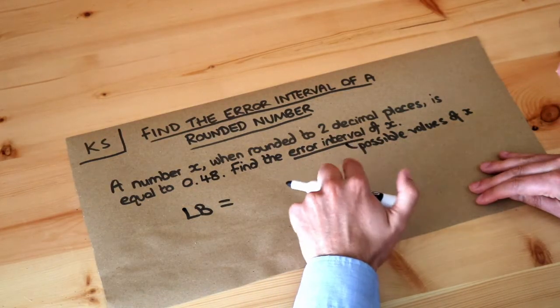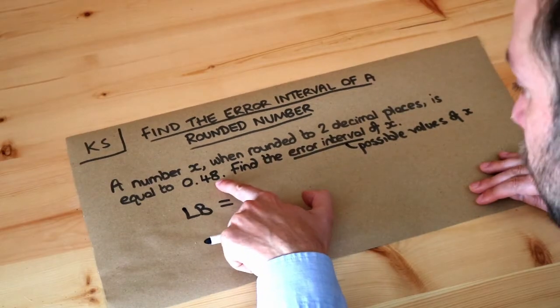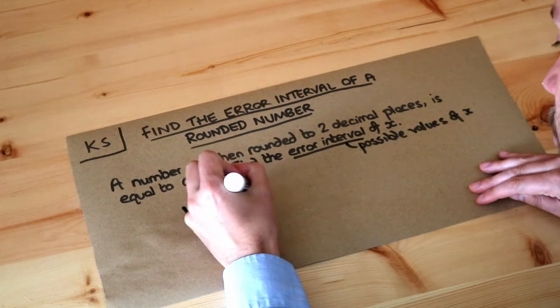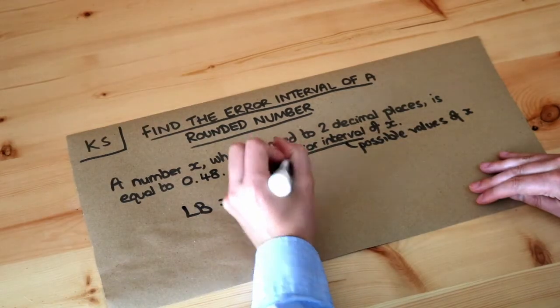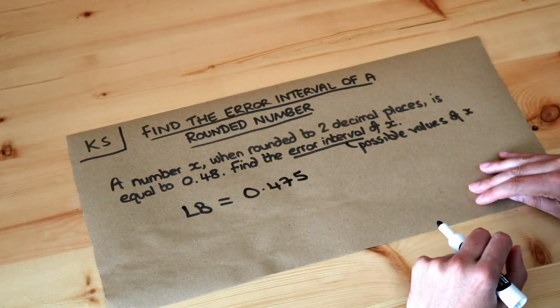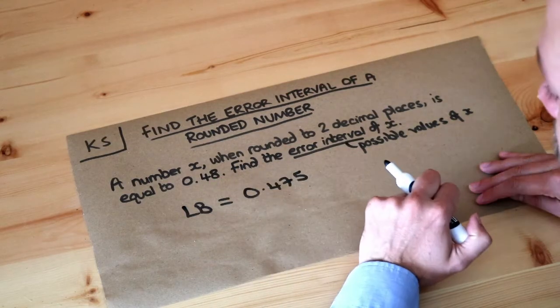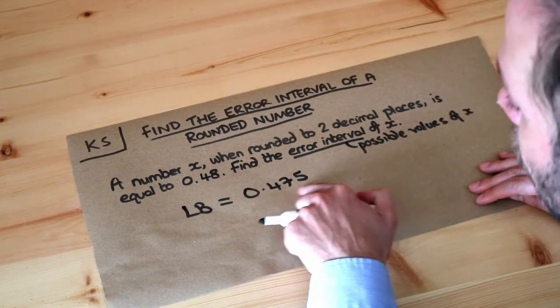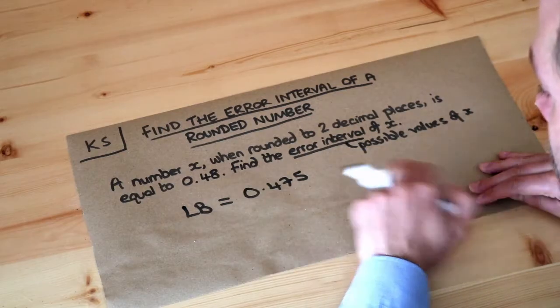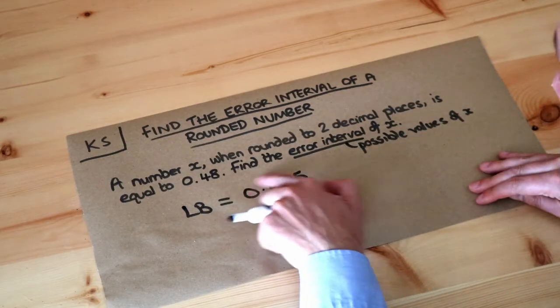Now do you remember the little trick? If you're rounding to decimal places you just reduce the last digit by 1, so 0.47 and then stick a 5 on the end and that will give you the lower bound. And if we round this value to two decimal places it would give you 0.48. Whereas if we had any lower it wouldn't round to 0.48. So this is the lowest that x could have been.